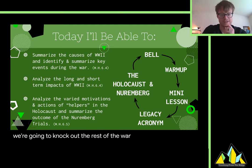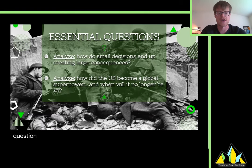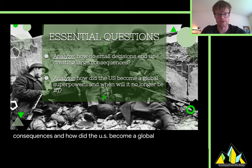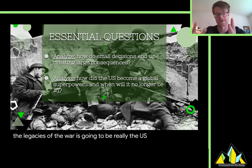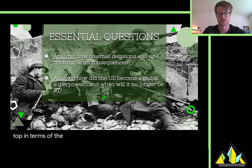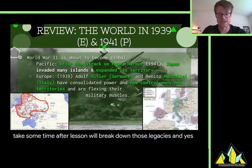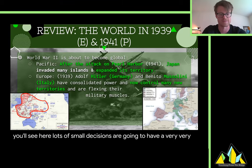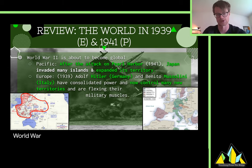We're gonna knock out the rest of the war basically just with our mini lesson. So, finishing World War II, 1939 to 1945. Our essential questions: How do small decisions end up creating large consequences? And how did the US become a global superpower, and when will it no longer be number one? One of the legacies of the war is going to be really the US coming out on top as the major world power.